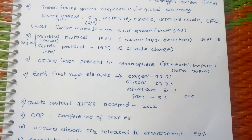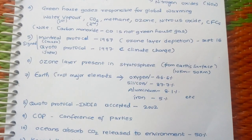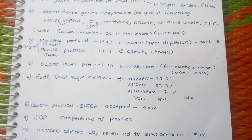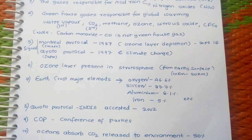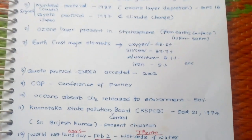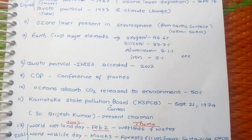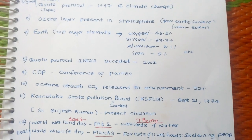The Kyoto Protocol is from Japan, signed in 1997, and was assigned for climate change. The Ozone Layer is present in the Stratosphere, from 10 km to 15 km above Earth's surface.